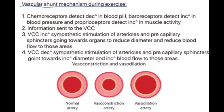Now let's look at the vascular shunt mechanism during exercise — it's quite a simple process with four steps. During exercise, the chemoreceptors detect a decrease in blood pH — remember, a decrease in pH means it's more acidic. Baroreceptors detect an increase in blood pressure, and proprioceptors detect that increase in muscle activity. All that information is sent to the vasomotor control centre, also known as the VCC, in the brain. The VCC then increases sympathetic stimulation of the arterioles and precapillary sphincters going towards the organs to reduce their diameter and reduce blood flow to those areas — so we can increase it to the muscles. The VCC then decreases sympathetic stimulation of the arterioles and precapillary sphincters going towards the muscles, which increases their diameter and increases blood flow to those areas. So the blood you've stopped going to the organs, you redirect to the muscles.